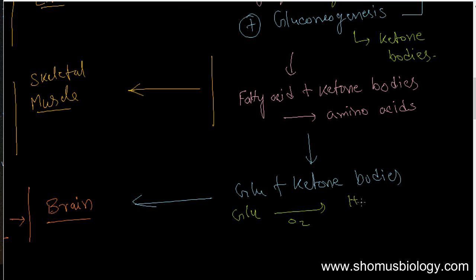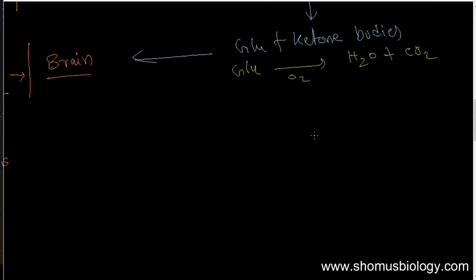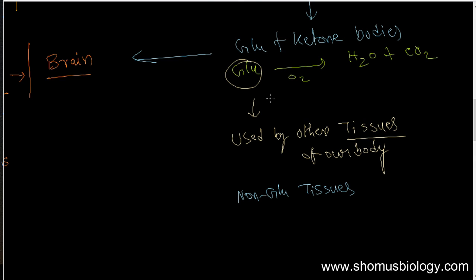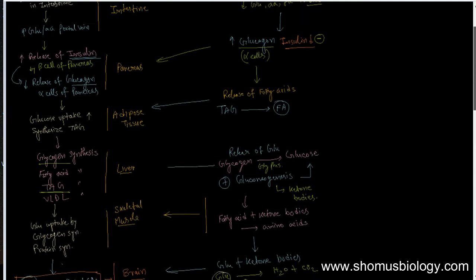The ketone bodies produced are used by the brain, and glucose is oxidized into water and carbon dioxide, providing glucose for the brain and other glucose-requiring tissues. On the other hand, fatty acids and ketones are used as fuels for non-glucose-requiring tissues. Those tissues pick up ketone bodies and utilize them for their nourishment.